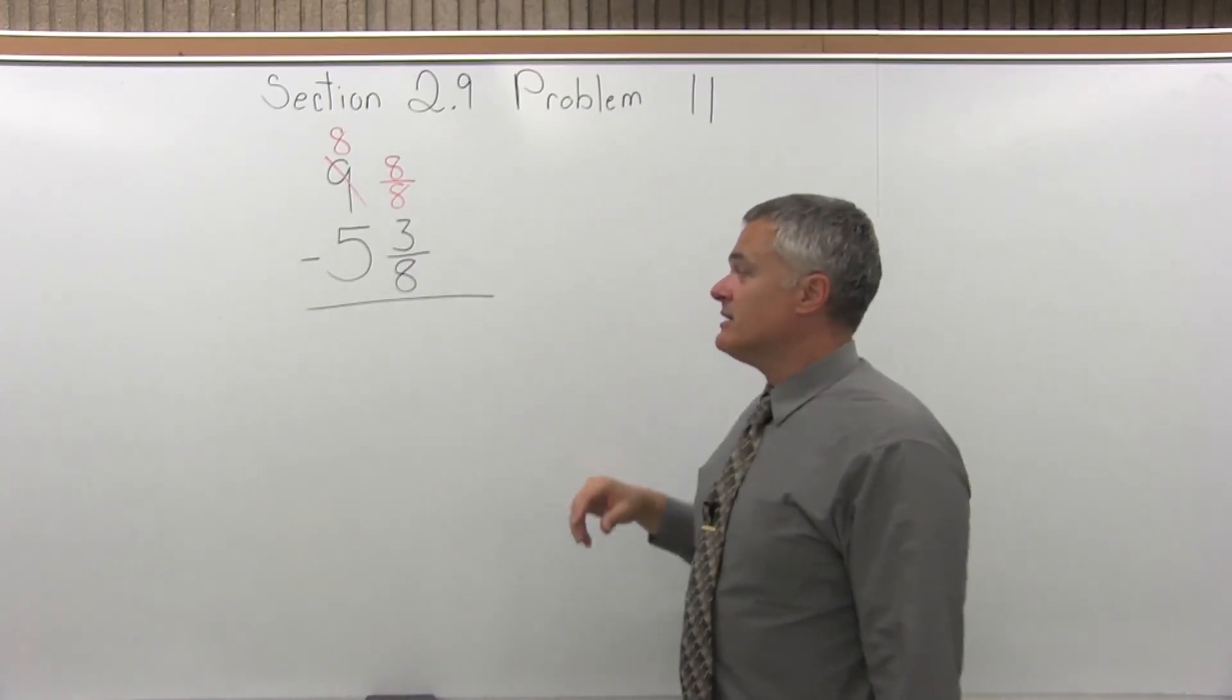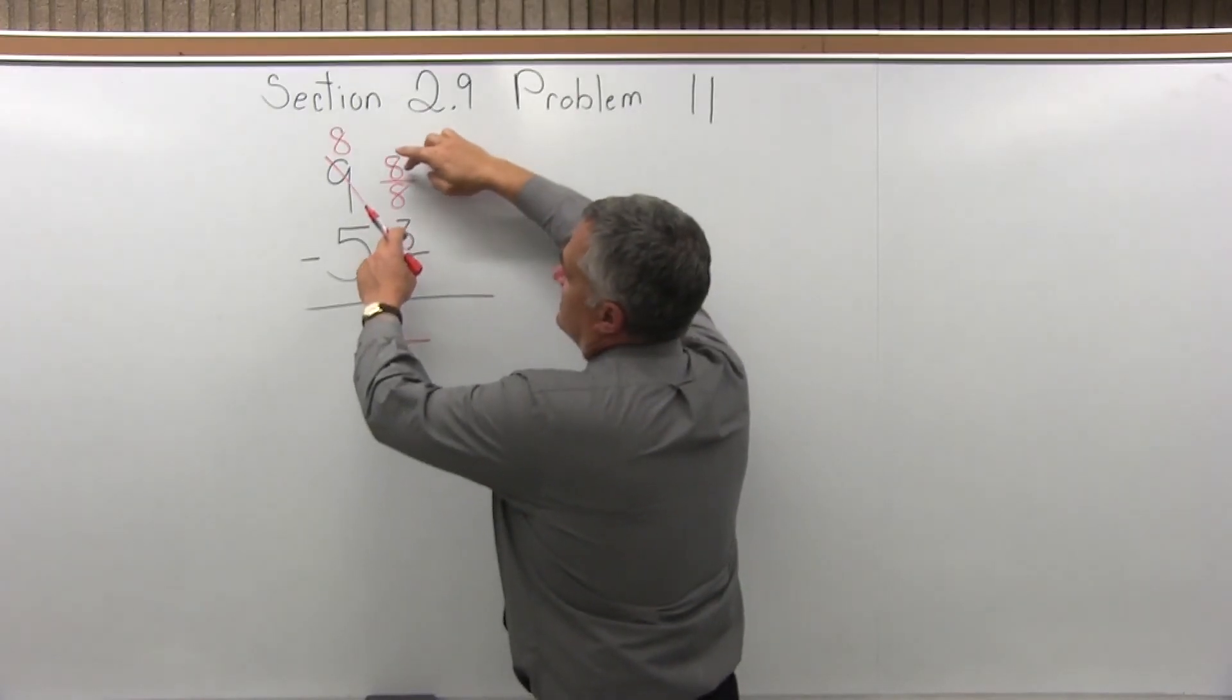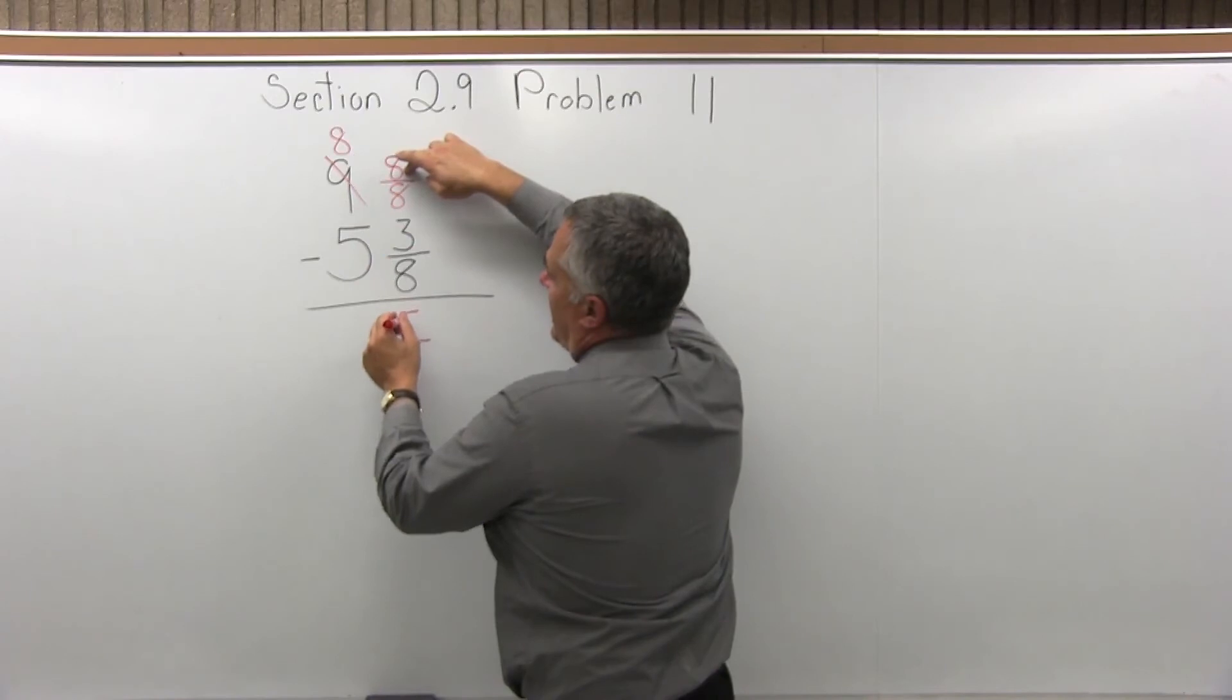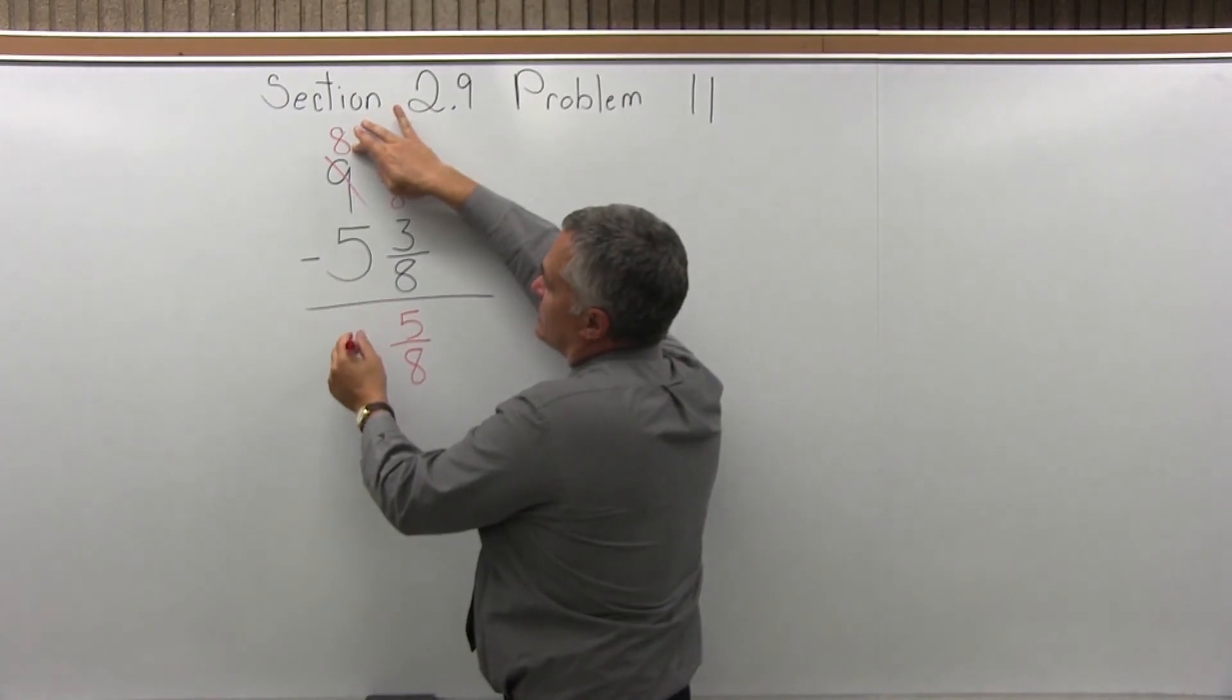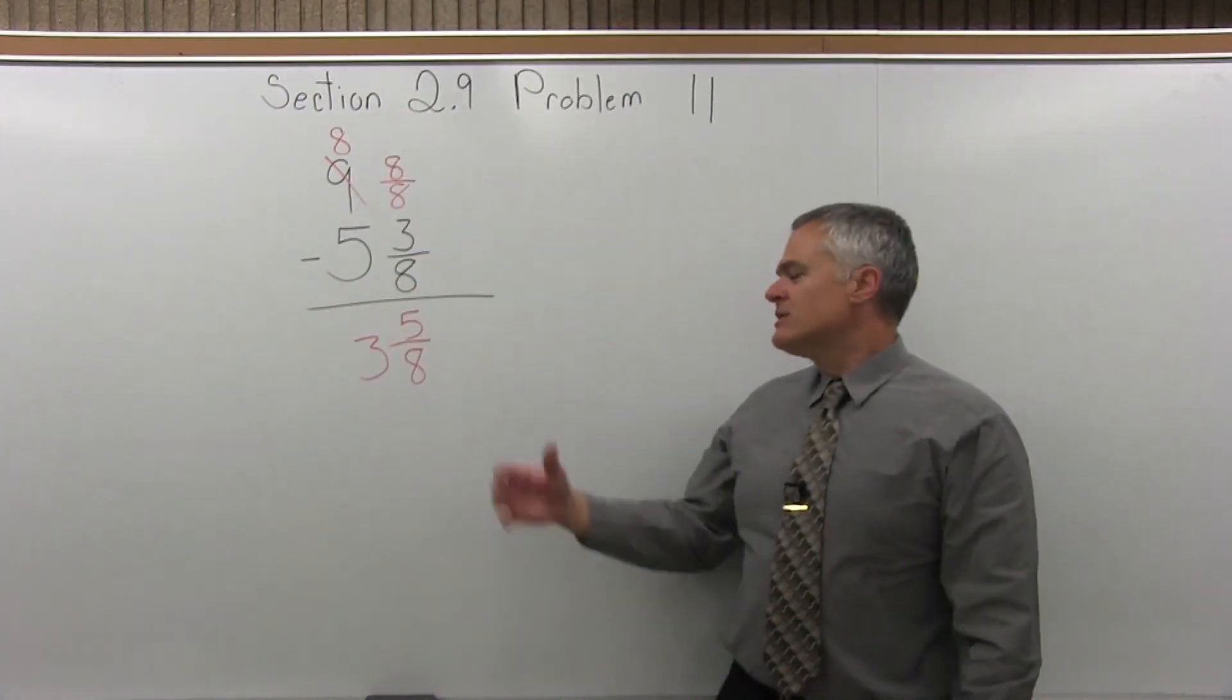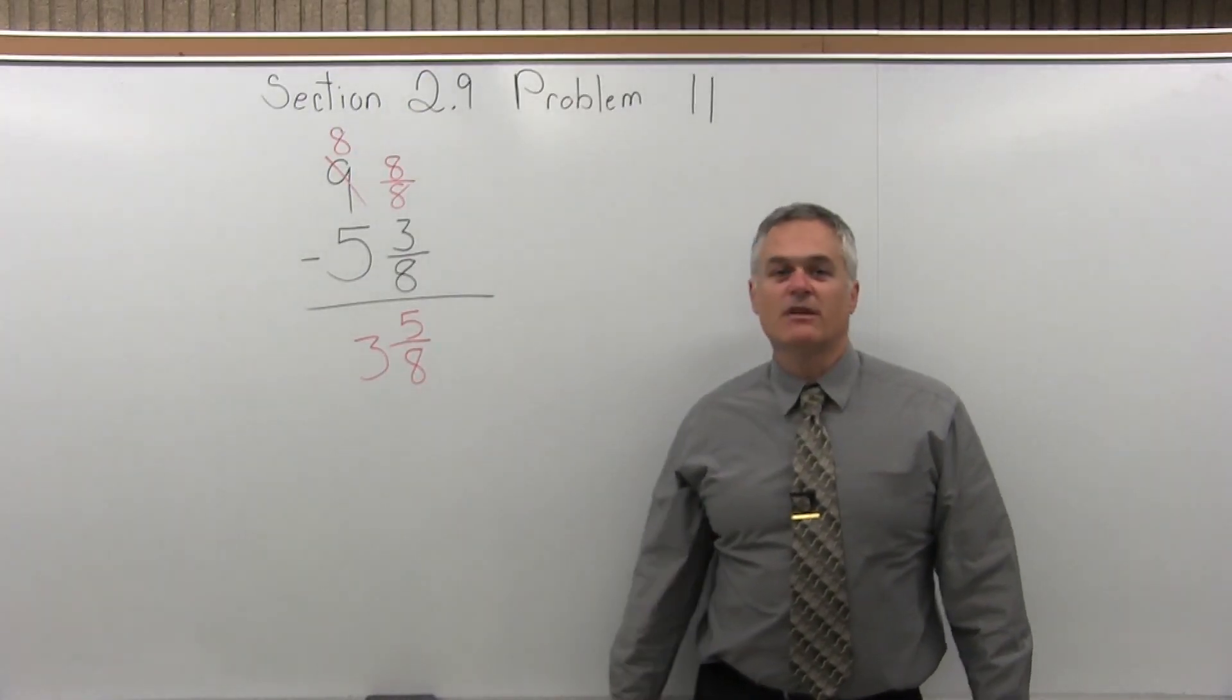Now the way it's written I can go ahead and subtract. I have a common denominator. The numerators, if I subtract 8 minus 3, that's 5. My common denominator is 8. Then for my whole numbers, it's 8 minus 5, which is 3. So my answer is 3 and 5 eighths. Can you reduce that? The answer is no, you can't. So 3 and 5 eighths is the final answer.